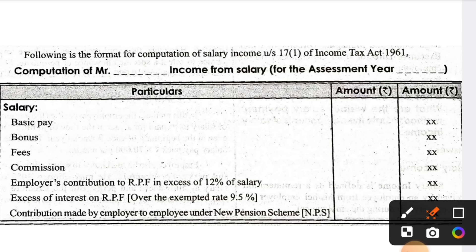In the pro forma of income from salary, the first side heading is Salary. Under the salary section you will have: basic pay — if you find basic payments in the question, enter that amount under salary. Also bonus, fees, commission, employer's contribution to RPF in excess of 12% of salary, and excess interest contribution made by employer to employee under the New Pension Scheme (NPS) — all these go under salary.